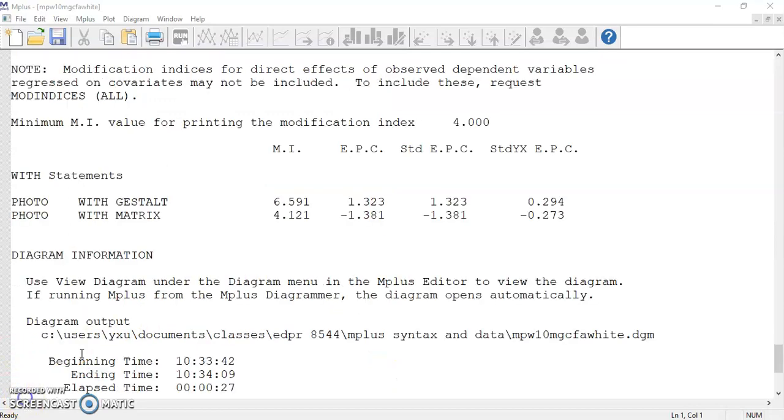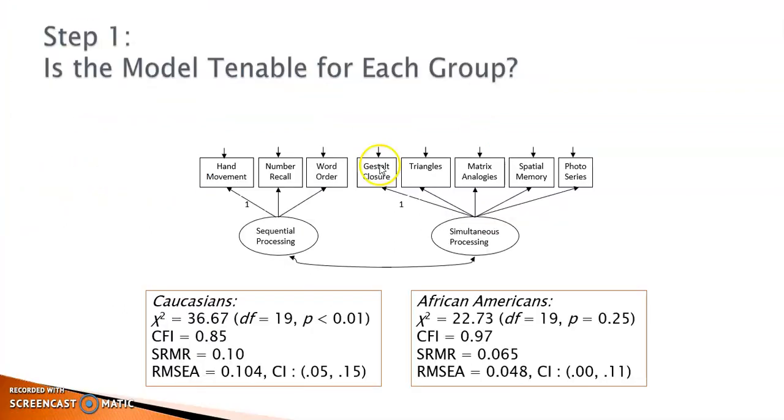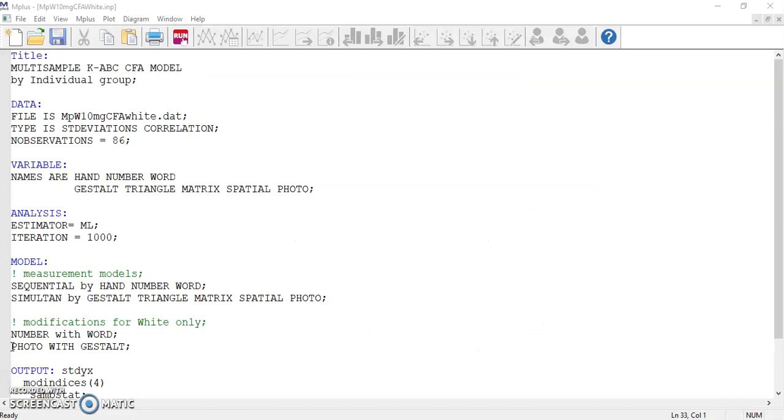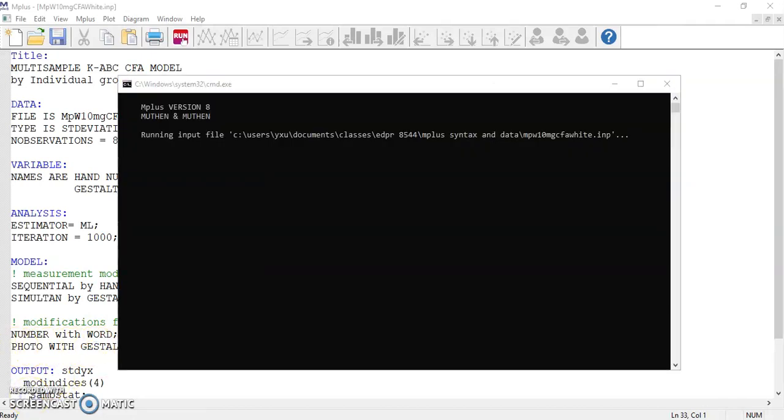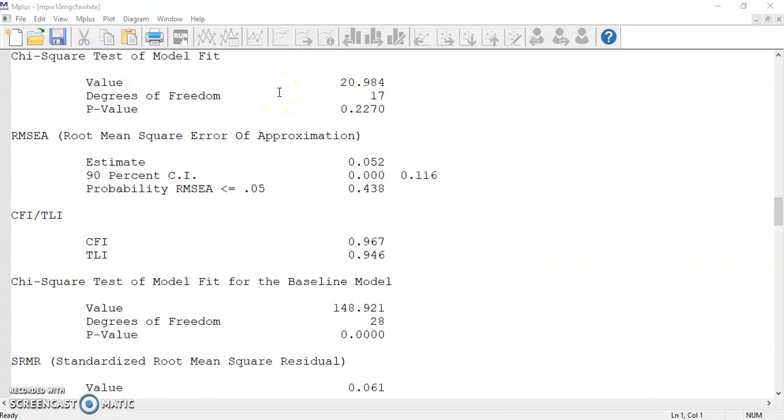We can see that the model fit is getting better, but not enough yet. Take a look at the modification indices. You can see that the one feasible suggestion is to add a correlation between the error terms of photo and gestalt. Both are indicators of simultaneous processing. Let's make this change in the command file. Now we've reached good model fit indices. The model chi-square is 20.98 with degrees of freedom 17. The RMSEA is 0.05, CFI is 0.97, and the SRMR is 0.06.